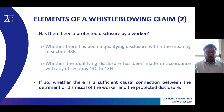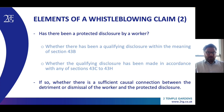A number of sub-issues arise out of these two questions, but a complete analysis is beyond the scope of this webinar. Suffice to say that section 43B will be dealt with in more depth in the next slide, and as for sections 43C to 43H, these set out the manner or manners in which a qualifying disclosure must be made in order to comprise a protected disclosure. The most often cited sections are either section 43C, which allows for a protected disclosure either to the worker's employer or to the person responsible for the relevant failure, or section 43G, which sets out the conditions to be met in respect of a disclosure made to unconnected third parties such as the press.